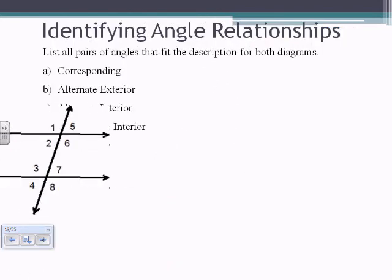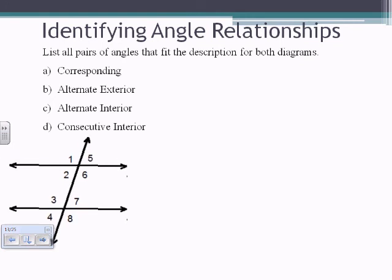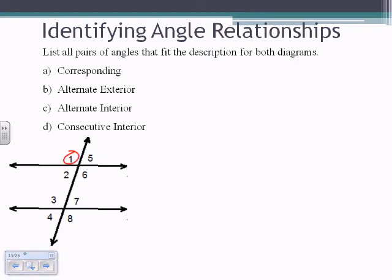Identifying the pairs: list all pairs of angles fitting each description for the diagram. For A, corresponding angles — same spot on each intersection: 1 and 3, 5 and 7, 2 and 4, and 6 and 8.